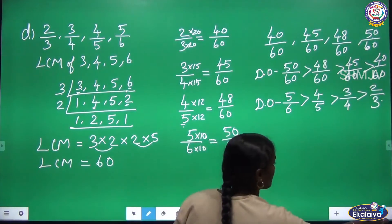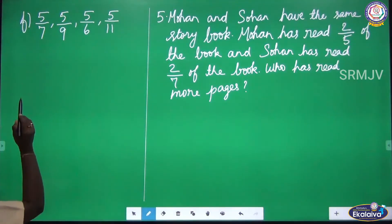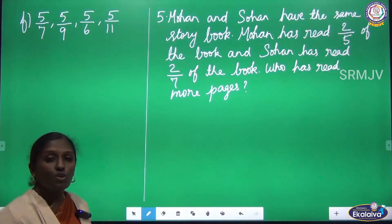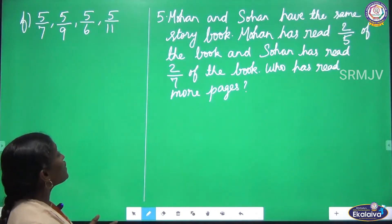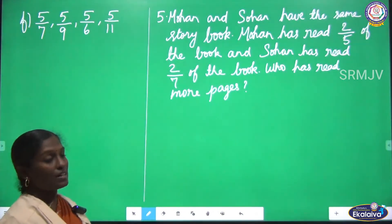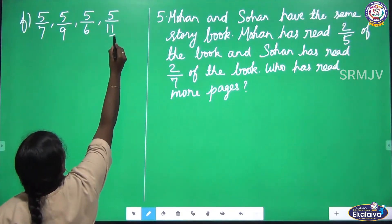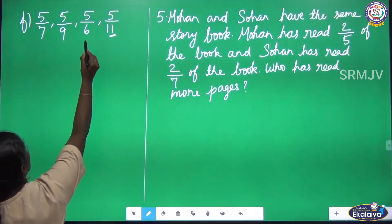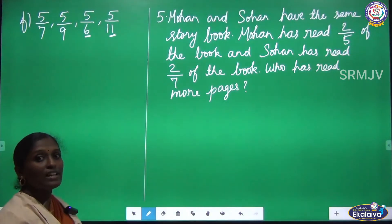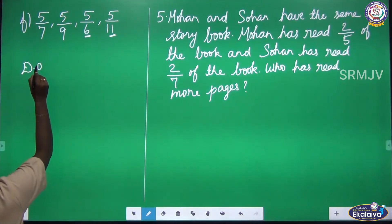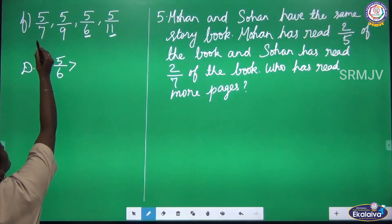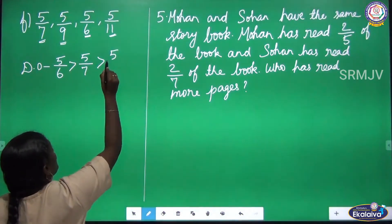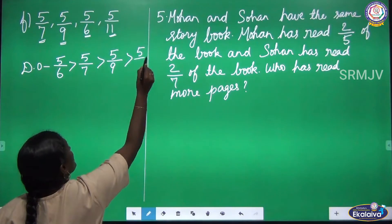Is it clear, children? The next fractions are 5 by 7, 5 by 9, 5 by 6, and 5 by 11. These fractions are unlike fractions with the same numerator, so we compare the denominators. The fraction with the greater denominator is smaller, and the fraction with the smaller denominator is greater. So in descending order: 5/6 is greatest, then 5/7, then 5/9, and 5/11 is the smallest.